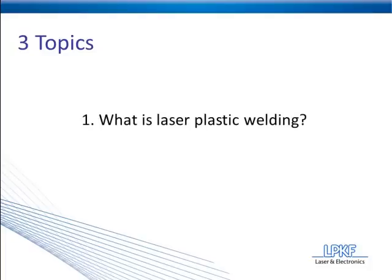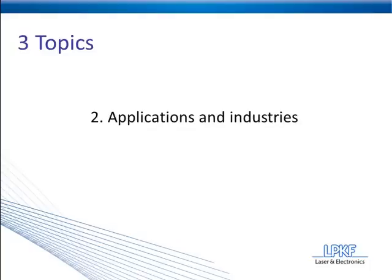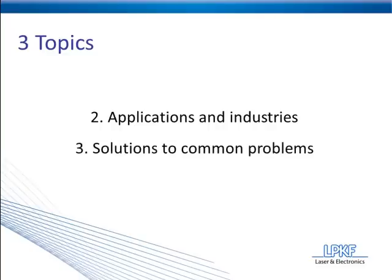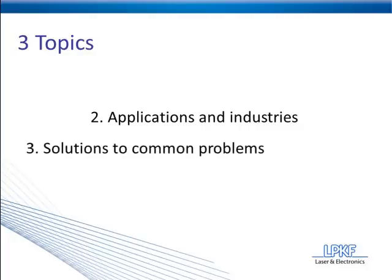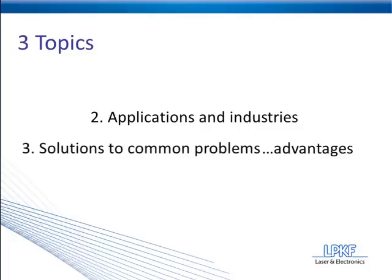Let's go over the three main topics we're going to cover today. First, what is laser plastic welding — covering the basic process and fundamental concepts. Second, applications that currently use laser plastic welding and the industries they're found in. And finally, how laser plastic welding can be a solution to common problems with other plastic joining methods — which we'll refer to as advantages. Topics two and three will be covered simultaneously: as we go through the advantages, I will list applications that correspond to each one.